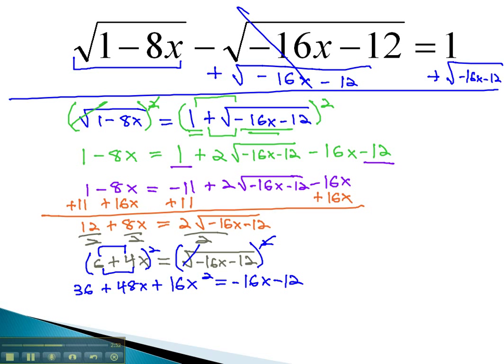We can move everything to one side by adding 16x and adding 12. Putting everything in the correct order, we end up with 16x squared plus 64x plus 48 equals 0.